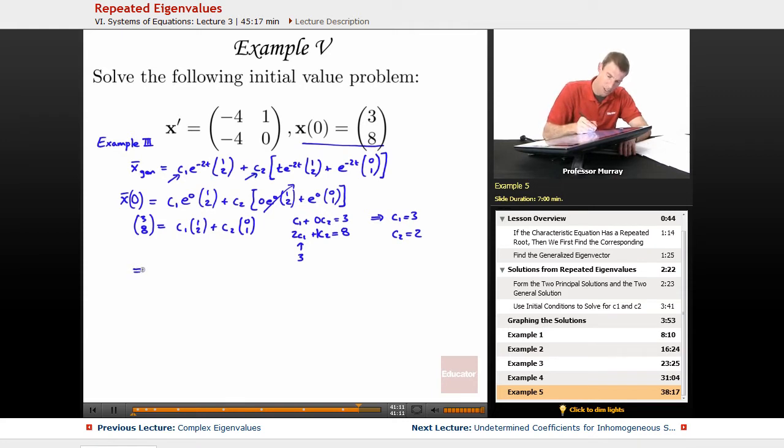I've got c1 was 3, e^(-2t) times (1, 2), plus c2 is 2 times t e^(-2t) times (1, 2), plus e^(-2t) times (0, 1). I'm just copying that general solution now, but I filled in c1 and c2.